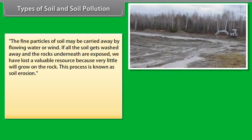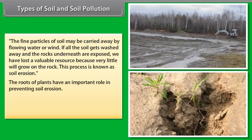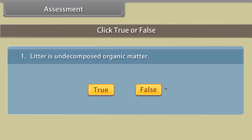The fine particles of soil may be carried away by flowing water or wind. If all the soil gets washed away and the rocks underneath are exposed, we have lost a valuable resource because very little will grow on the rock. This process is known as soil erosion. The roots of plants have an important role in preventing soil erosion. Vegetative cover on the ground has a role to play in the percolation of water into the deeper layers too.